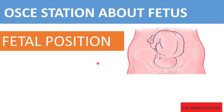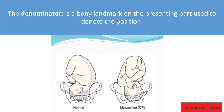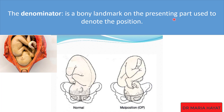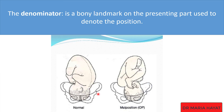In order to understand fetal position, you should know what the denominator is. As we know, the normal presenting part is vertex. In my previous video I have talked in detail about the presenting part — the link is in the description box. If during labor you do a vaginal examination and feel a vertex presentation, you should know its position. To tell the position of the presenting part, you first choose a bony landmark. In vertex presentation, you choose the occiput. The denominator is a bony landmark on the presenting part used to denote the position.